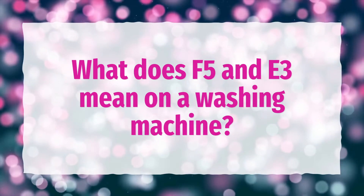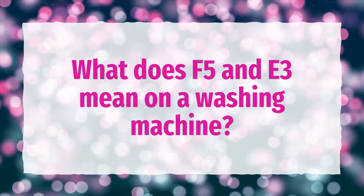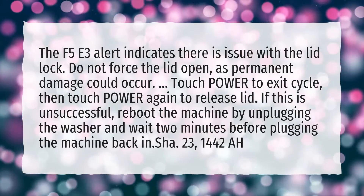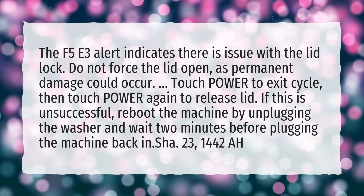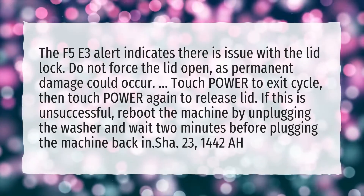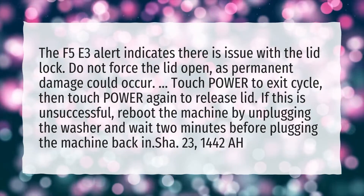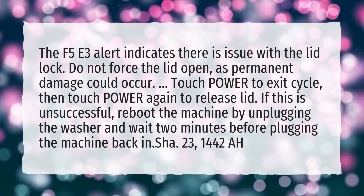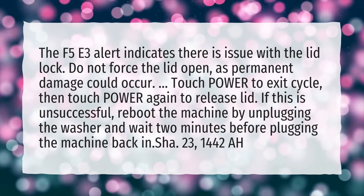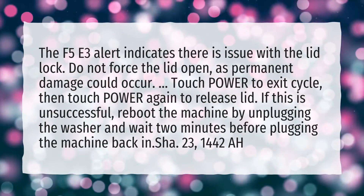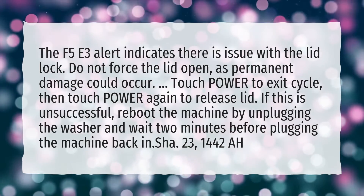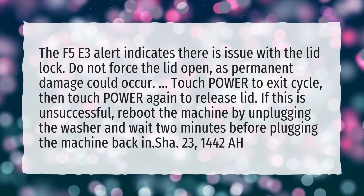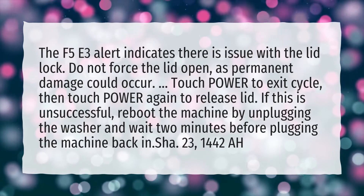What does F5 and E3 mean on a washing machine? The F5 E3 alert indicates there is an issue with the lid lock. Do not force the lid open, as permanent damage could occur. Touch power to exit the cycle, then touch power again to release the lid. If this is unsuccessful, reboot the machine by unplugging the washer and wait 2 minutes before plugging the machine back in.